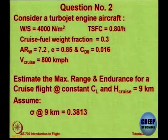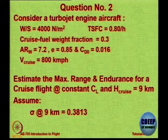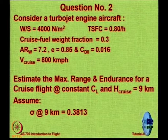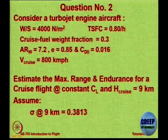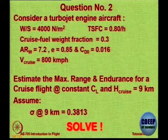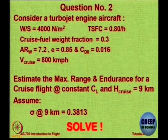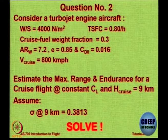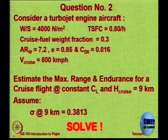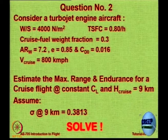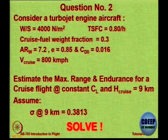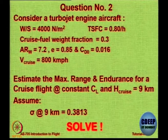This is the question. The aircraft is flying at 9 kilometers altitude at 800 km/h, and the pilot decides to fly for maximum range with C_L constant and cruise altitude H constant. As the aircraft travels, the aircraft weight will go down because fuel is consumed. So if you want to maintain the same altitude, what does the pilot have to do?